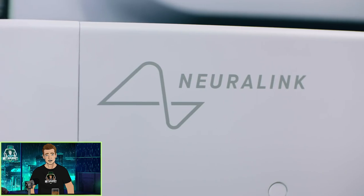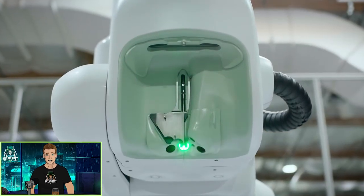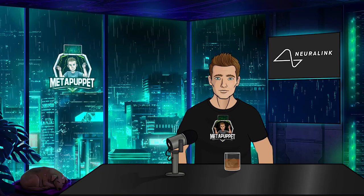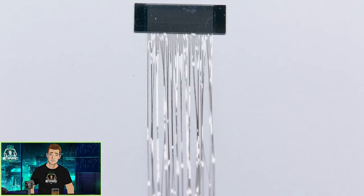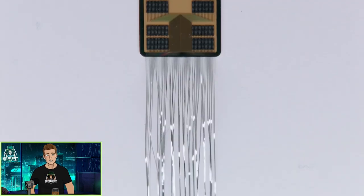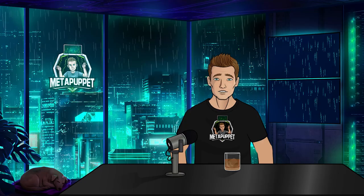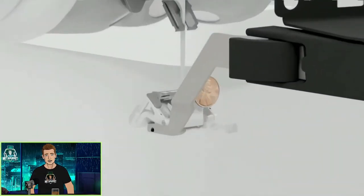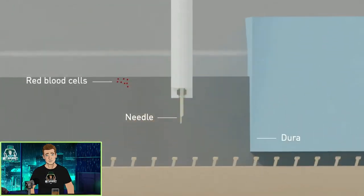The surgery to implant the N1 is actually done not by a person, but by a robot, fittingly called R1. There are a few reasons for the robot surgeon. First, the size of the threads on the N1 are roughly two red blood cells wide. That's tiny. The needle used to implant the threads is only 40 microns wide, also tiny.